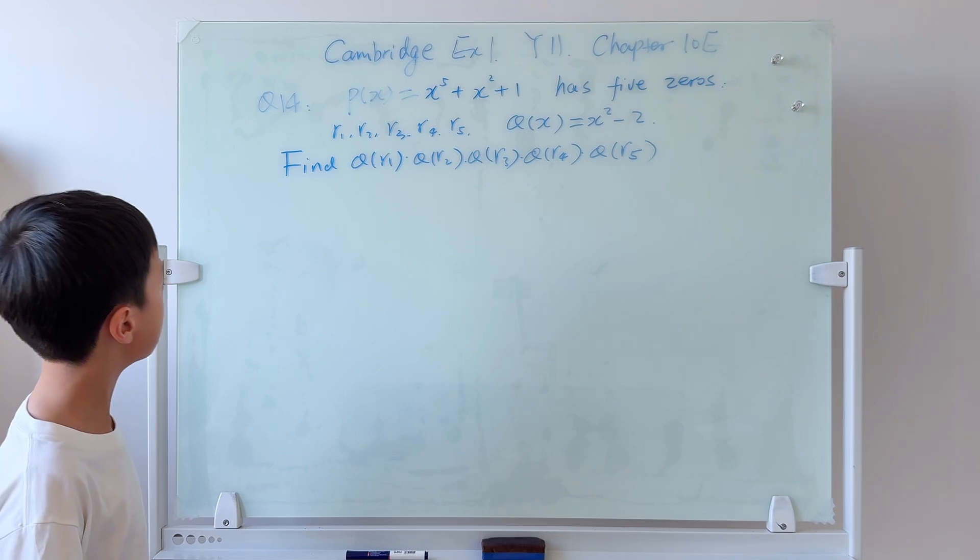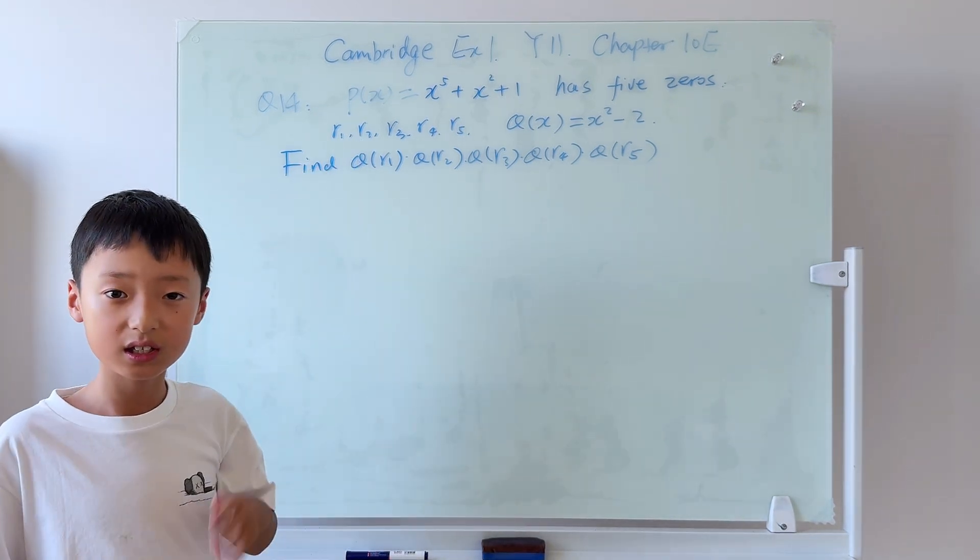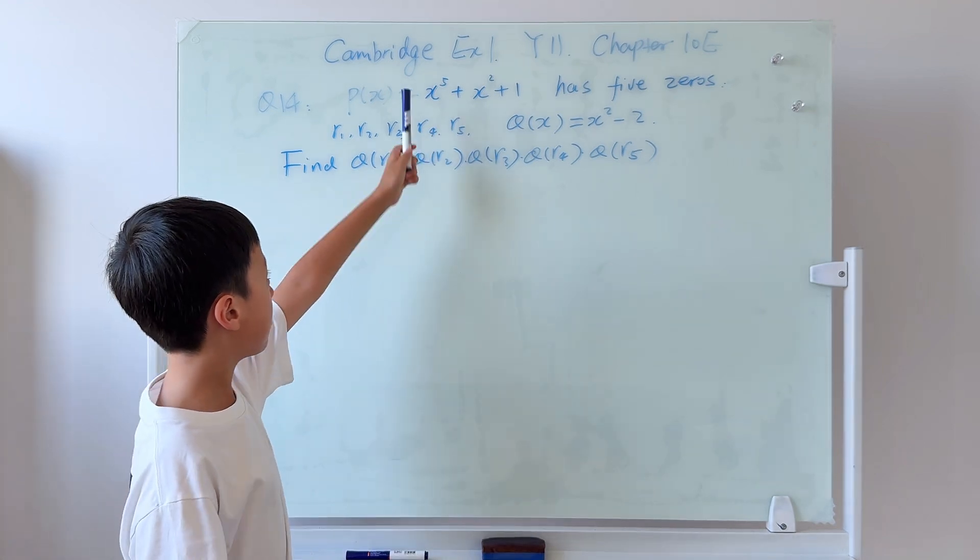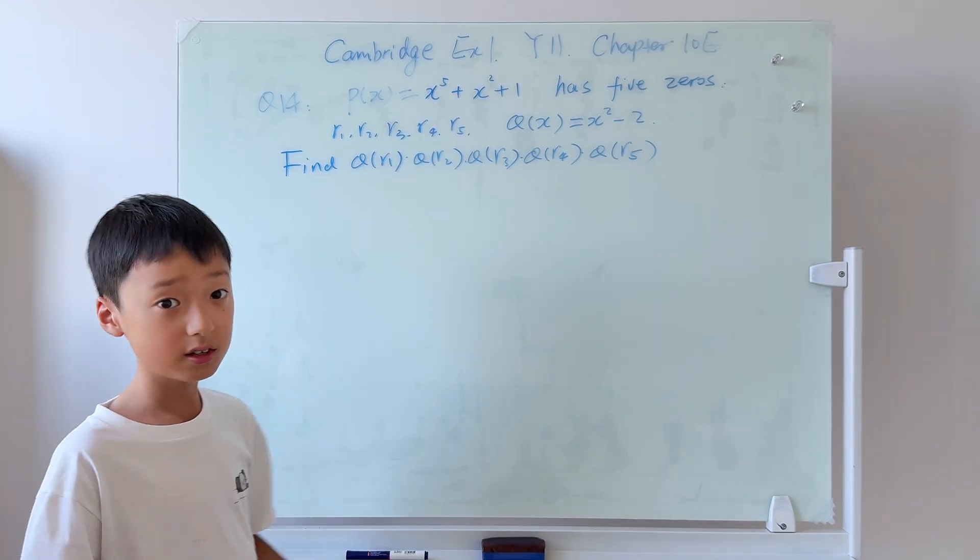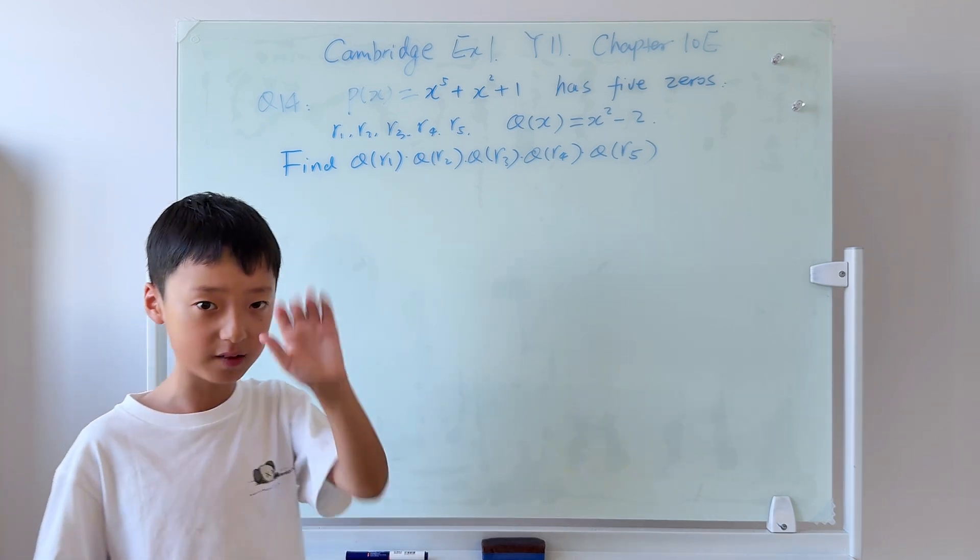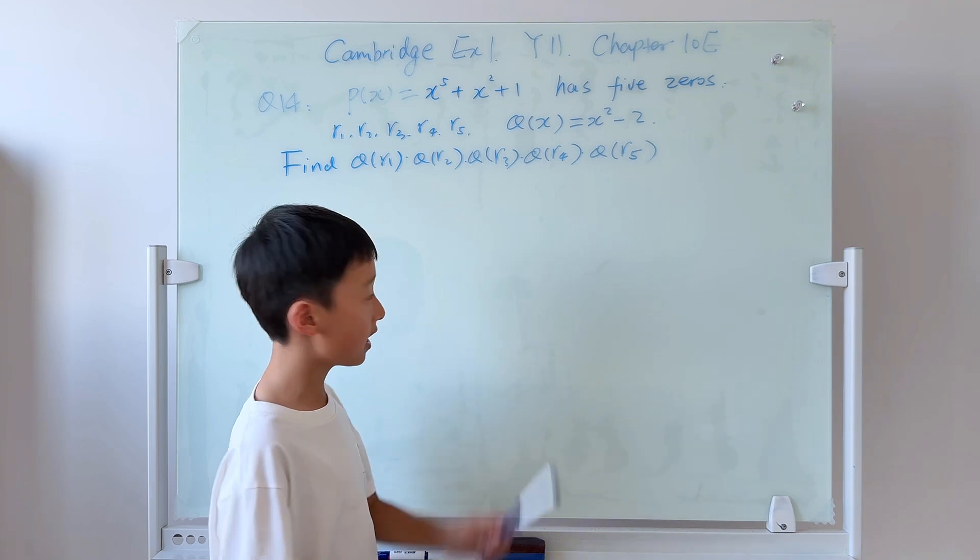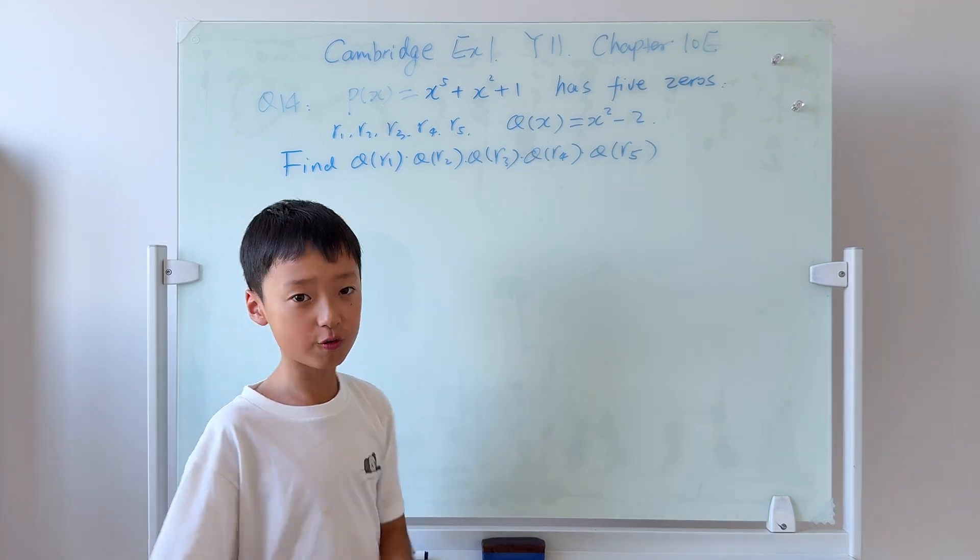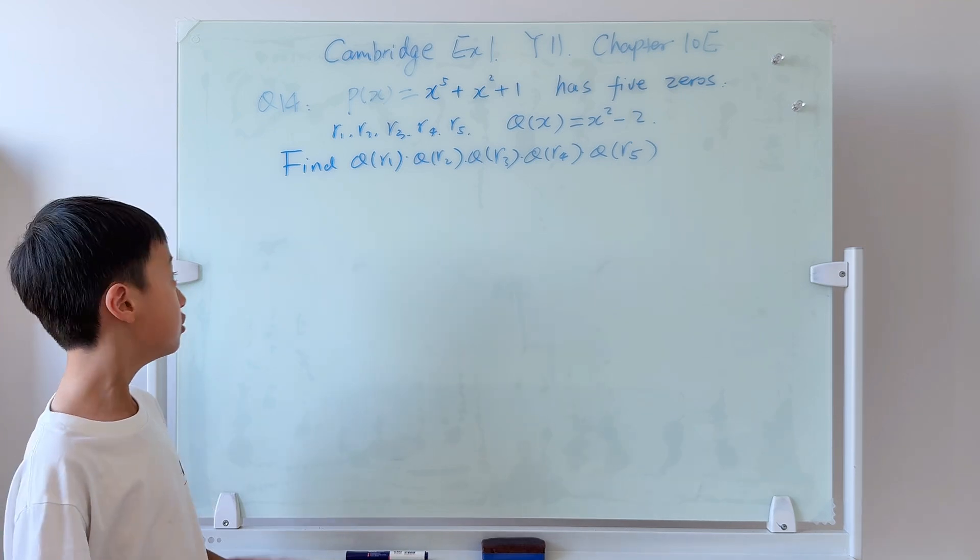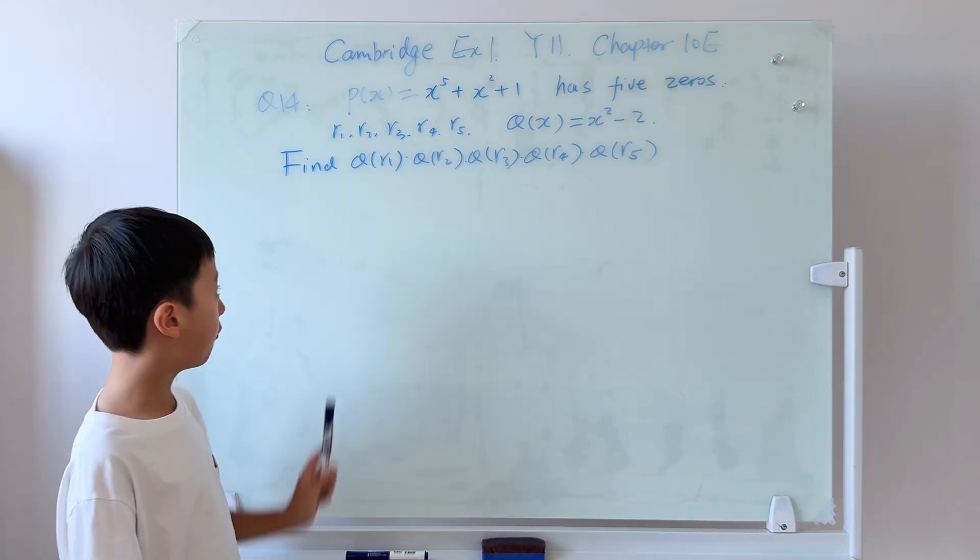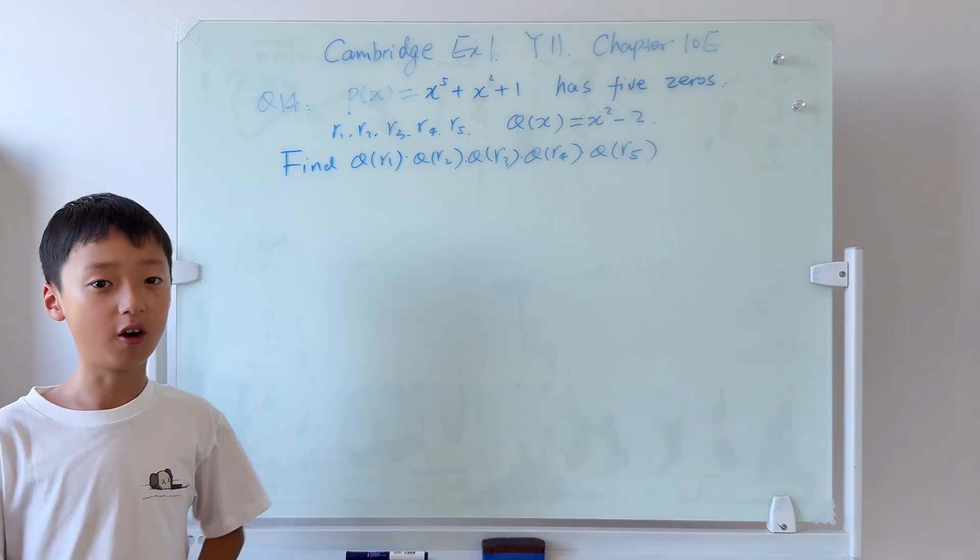This question tells us that we have a polynomial p(x) equals x to the power 5 plus x squared plus 1, and this polynomial has five zeros. There's another polynomial q(x) which equals x squared minus 2. The question asks us to find q(r1) times q(r2) times all the way to q(r5).